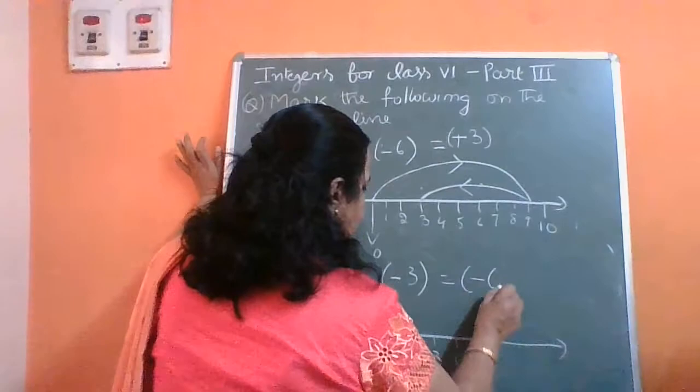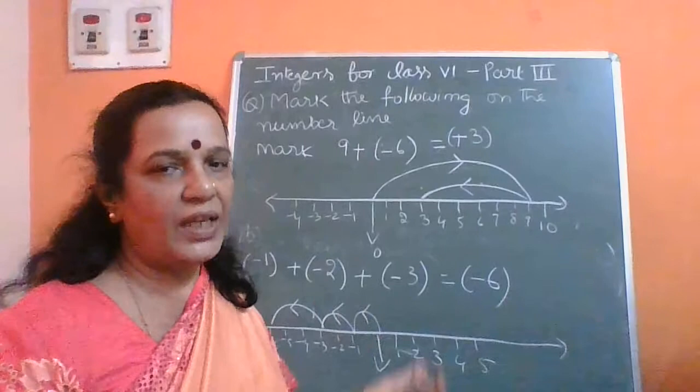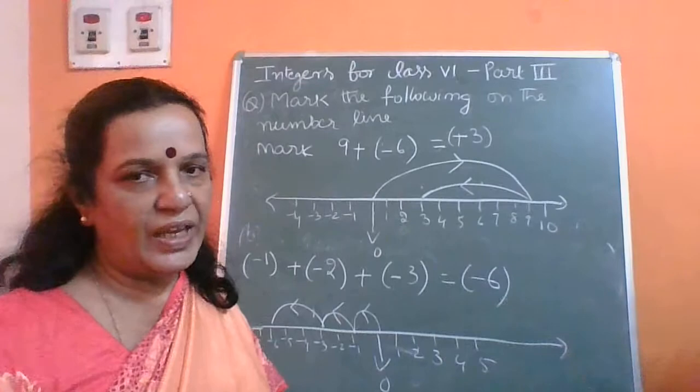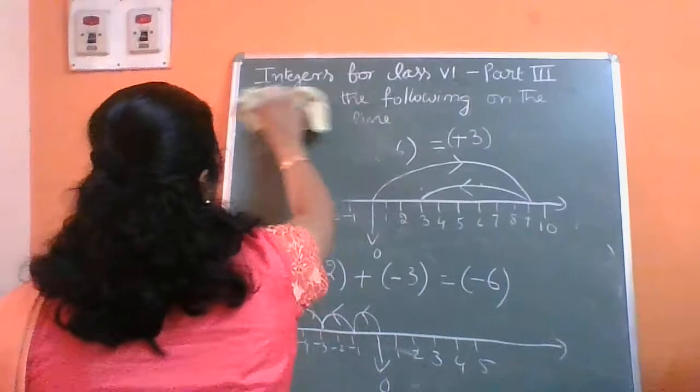That means when you are adding all the numbers with a negative sign, add the numbers as they are and put the negative sign.